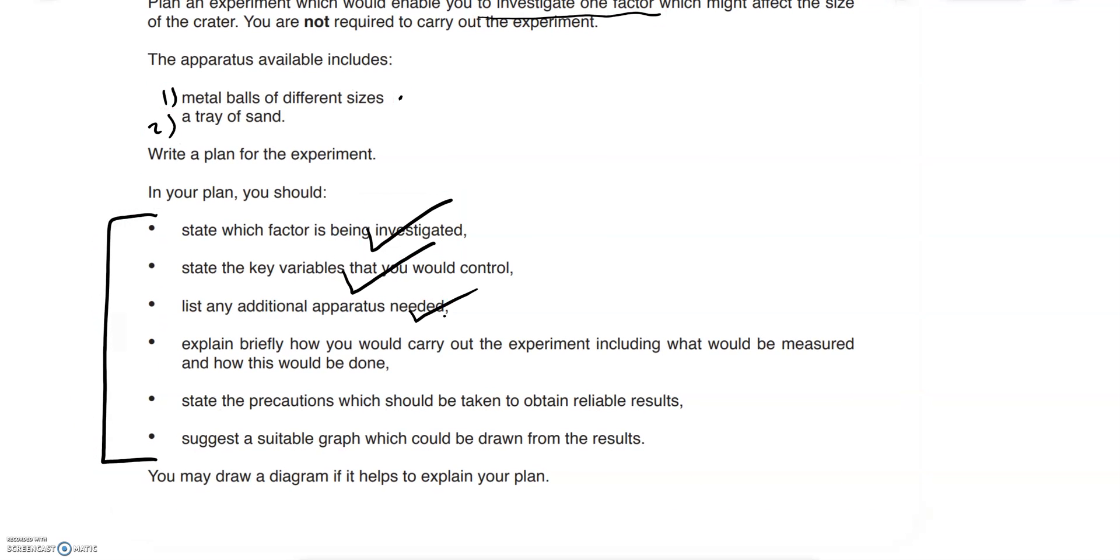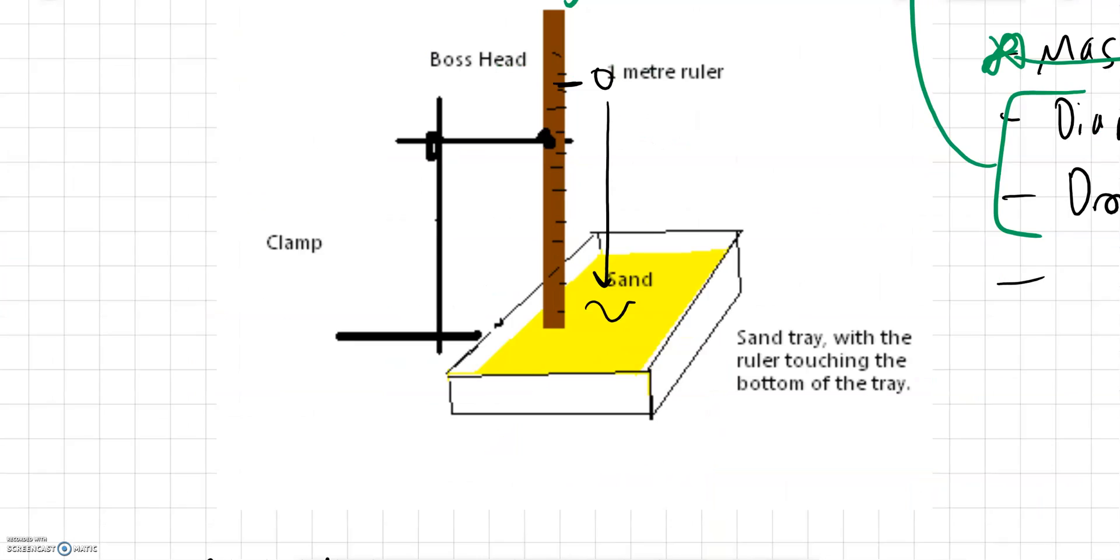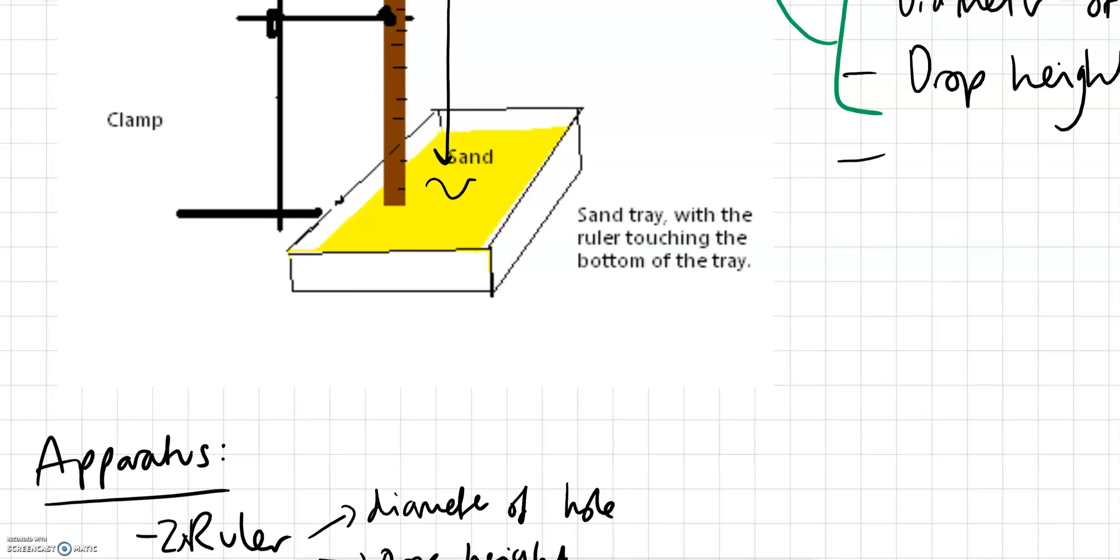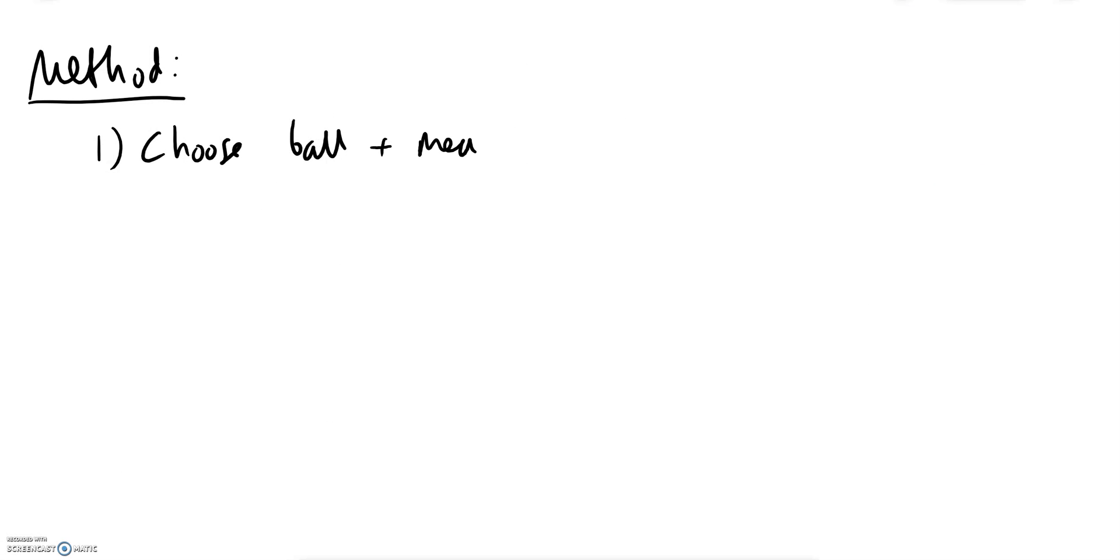So now we've listed the apparatus, we need to explain briefly. Notice the word briefly, so we don't have to go into huge details about what we're going to do. So the next thing we're going to write is a method. Always a good idea to number it and just go down in order what you're going to do. So you start by: choose ball. Remember what we're investigating? If you're not sure you go back up to your variables. We're investigating the mass of the ball, so choose ball and measure mass. Now is that enough detail? No, you always need to say what you're going to use to do that, so measure mass with balance. And then you need to drop it from the same height, so I'd choose a height. Let's just say drop ball from 50 centimeters. It doesn't matter what value you really choose as long as it's reasonable height and it also shows you're going to keep it consistent throughout, so keep same throughout.